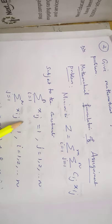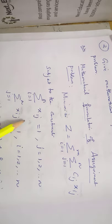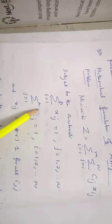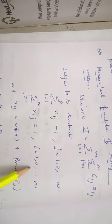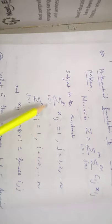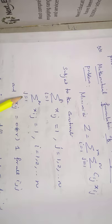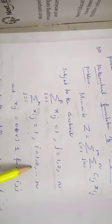Subject to two constraints. The first is the row constraint: sigma i equal to 1 to n of X_ij equals 1, for j equal to 1 to n. The second is the column constraint: sigma j equal to 1 to n of X_ij equals 1, for i equal to 1 to n. In the first constraint, sigma runs over i from 1 to n, so i equal to 1 gives X_1j where j runs from 1 to n. In the second, j runs from 1 to n and i can be taken from 1 to n.